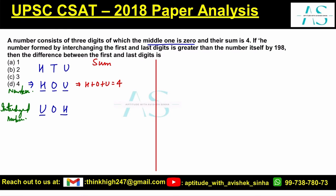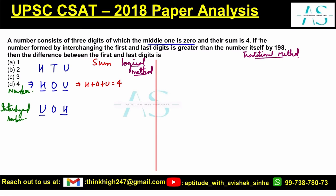We can use two methods to solve this. The first is the logical hit-and-trial method, where we substitute certain digit values for H and U. The second is the traditional algebraic method. We'll look at both one by one. Since H plus U must equal four, and the difference between the two numbers is 198, let's begin.